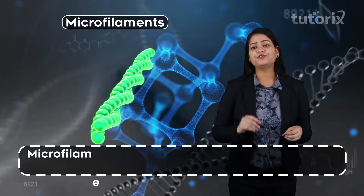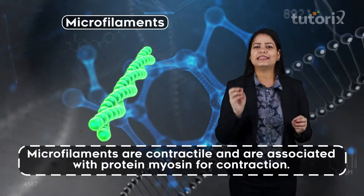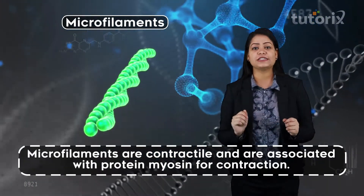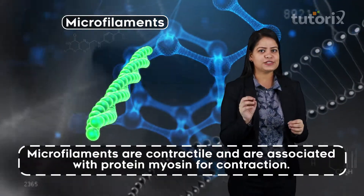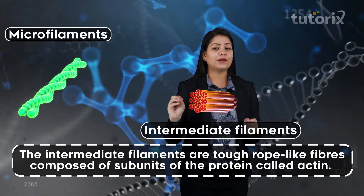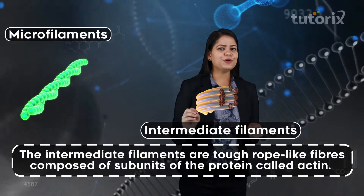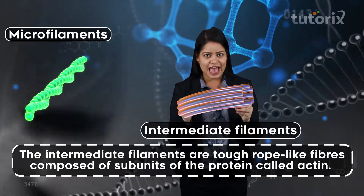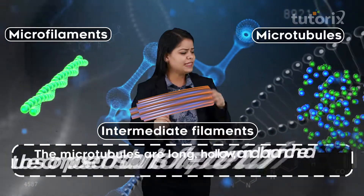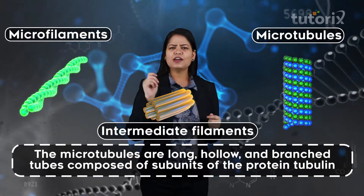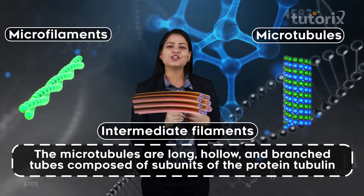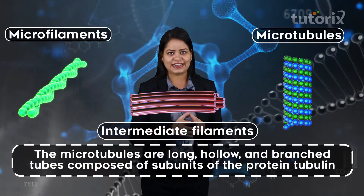The microfilaments are contractile — they are capable of producing contractions — and are found closely associated with the protein myosin for producing these contractions. The intermediate filaments are tough rope-like structures made up of subunits of the protein actin, and they are capable of producing a branched network as well. The microtubules are long hollow tubes made up of the protein tubulin, and they are also capable of producing a network inside the cell.